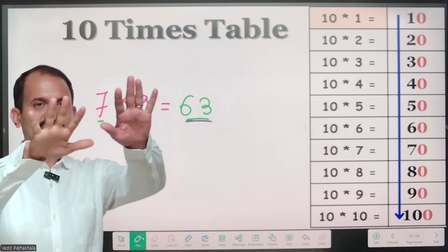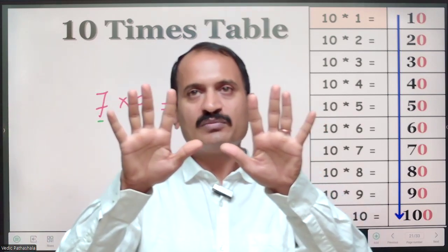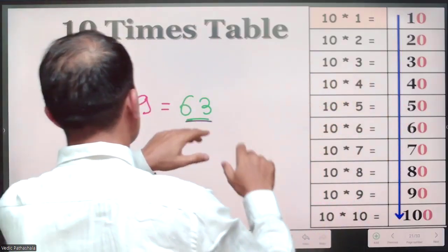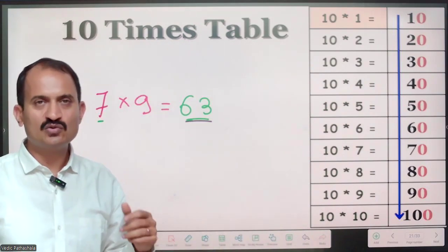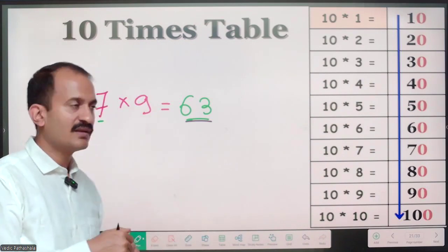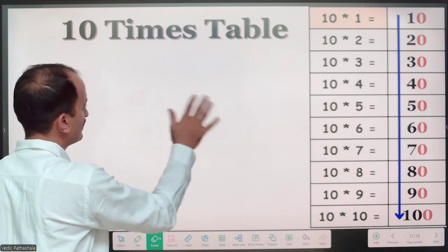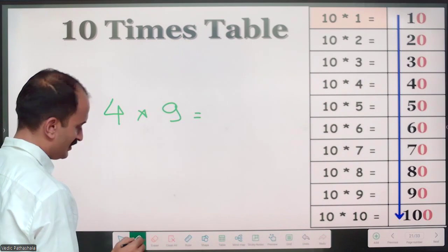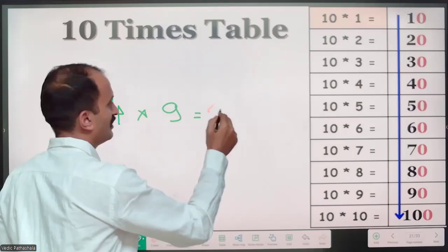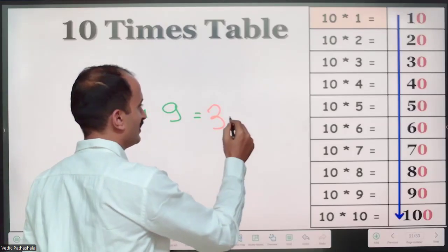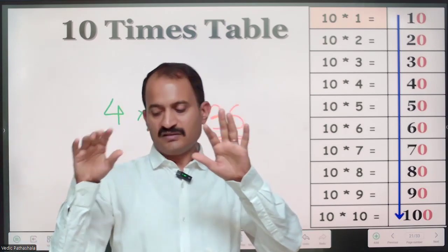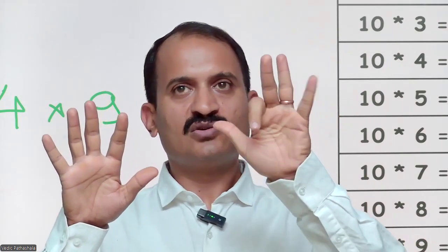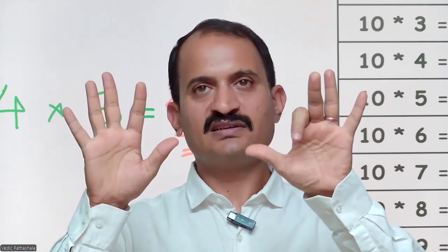You can do the same thing on your fingers — just fold your 7th finger. The fingers to the left of the folded finger are 6, so the answer is 63. Let's try one more example: 4 times 9. The first digit is 4 minus 1, which is 3. Then 9 minus 3 is 6. So the answer is 36. On fingers: hold the 4th finger folded — 3 fingers to the left and 6 to the right, confirming 36.